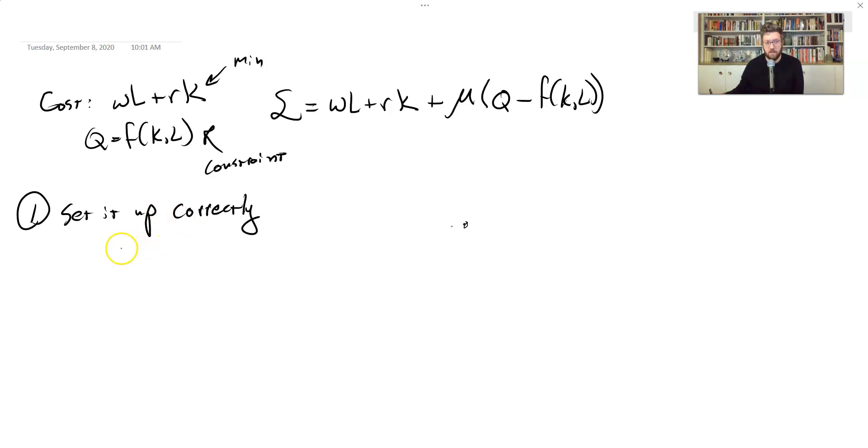After that, we follow the same steps to solve a Lagrangian. We first take the first order conditions for all choice variables, plus the Lagrangian multiplier. And in this case, our choices are K, L, and then the Lagrangian multiplier is that little mu.